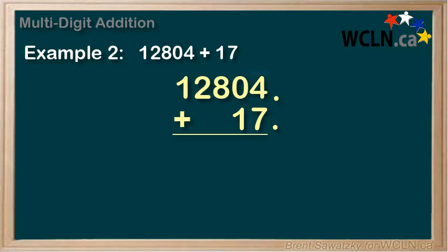We're ready to go. Starting in the right hand column, the ones column, four plus seven equals 11. So we'll mark down a one in the one spot and we'll carry the other one.